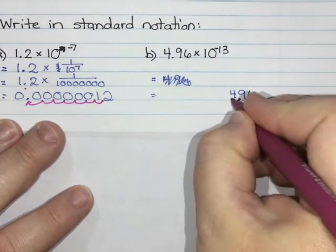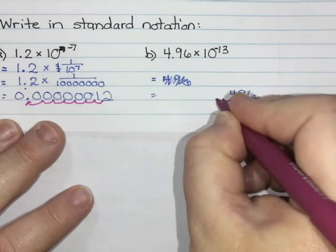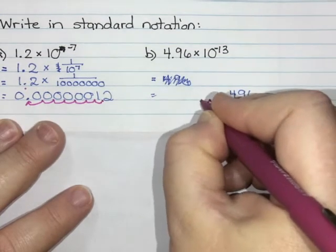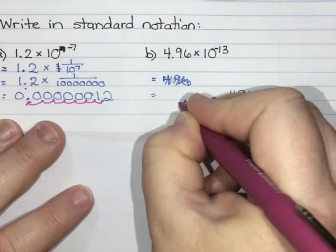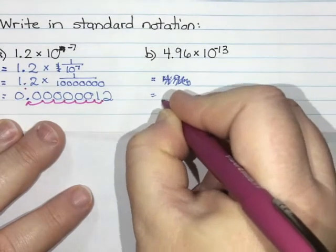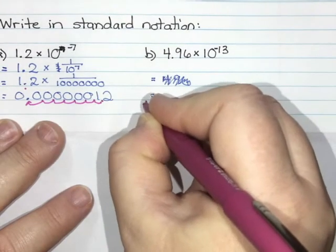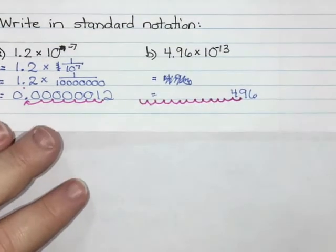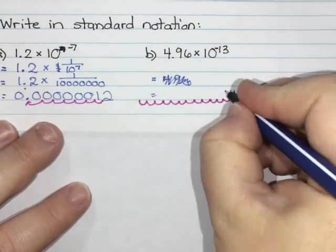So I've got 4, 9, 6, and I need to move that decimal 13 spots. Still don't think I left enough room. I've got 1, 2, 3, 4, 5, 6, 7, 8, 9, 10, 11, 12, 13. I didn't leave enough room, but I can make this work.